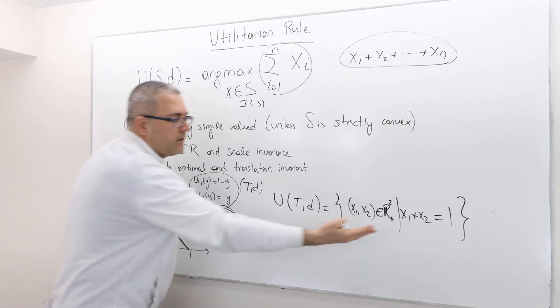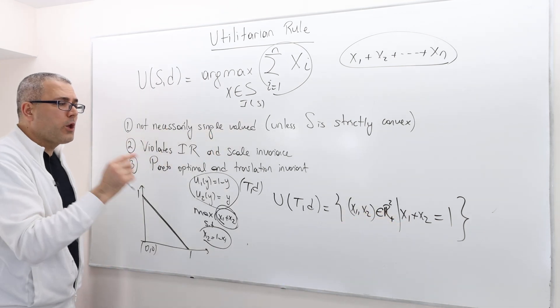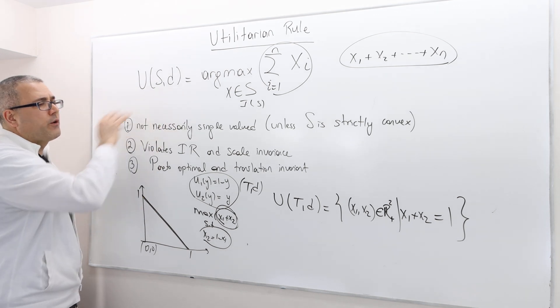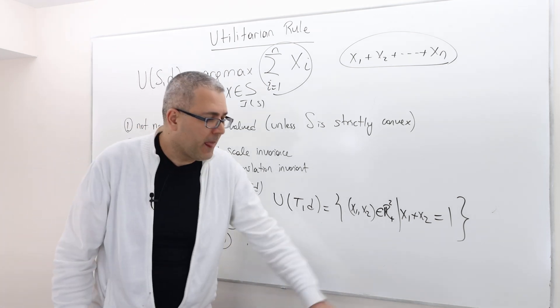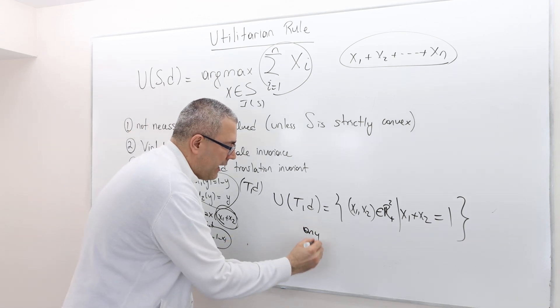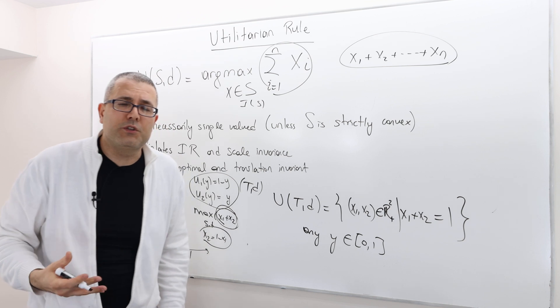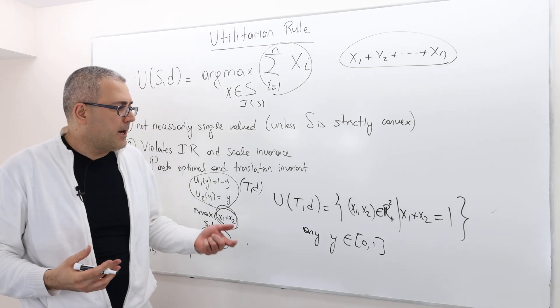So this straight line, or x2 equals 1 minus x1. All those points give us a solution according to the utilitarian rule, which basically means any y in [0,1] is a solution.